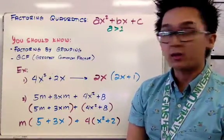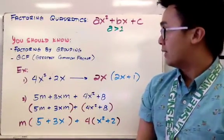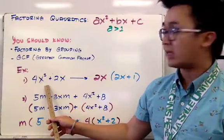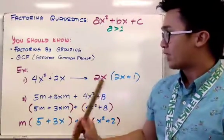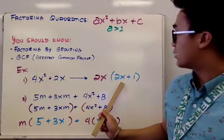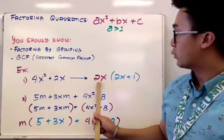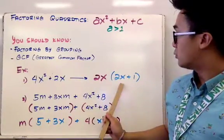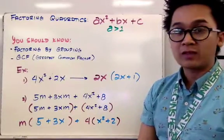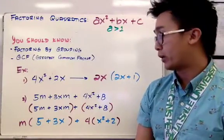I have two examples here of the two factoring techniques you have seen before. For 4x squared plus 2x, using the GCF which is 2x, factoring out gives us 2x times (2x plus 1). We know it's correct because distributing 2x back gives 4x squared plus 2x. Factoring is basically the reverse of the distributive property.